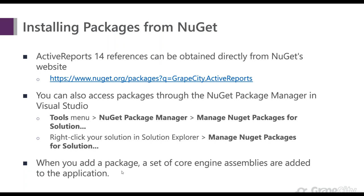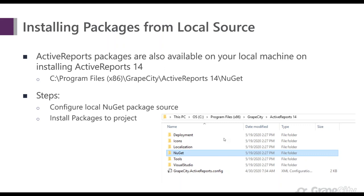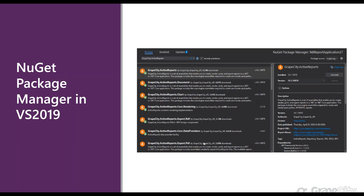When you add a package, a set of core engine assemblies are added to the application. The other option is installing from a local source — Active Reports packages are also available on your local machine when you install Active Reports 14. The local packages are installed in a NuGet folder within your Program Files x86 directory. To access them, configure your package source in the NuGet Package Manager to point to that directory instead of the online website.